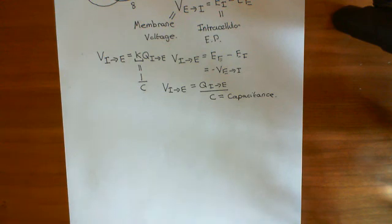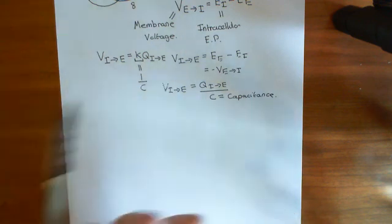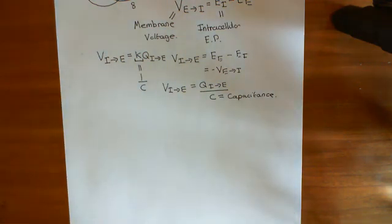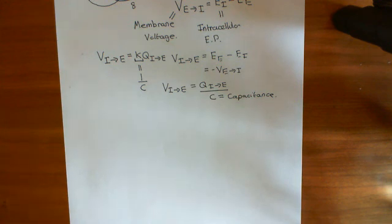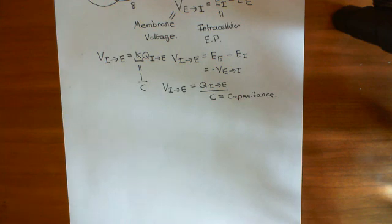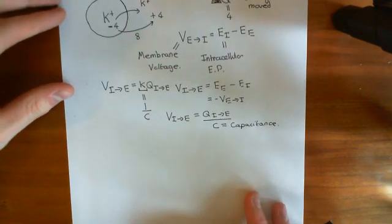It would be very difficult to actually work out what this constant is unless you measure it experimentally. To do it theoretically would require simplifying the model down and quite a bit of calculus. So we can measure capacitance across this membrane, and we can use it as a measure of vesicle fusion — which I will discuss how in the next video.